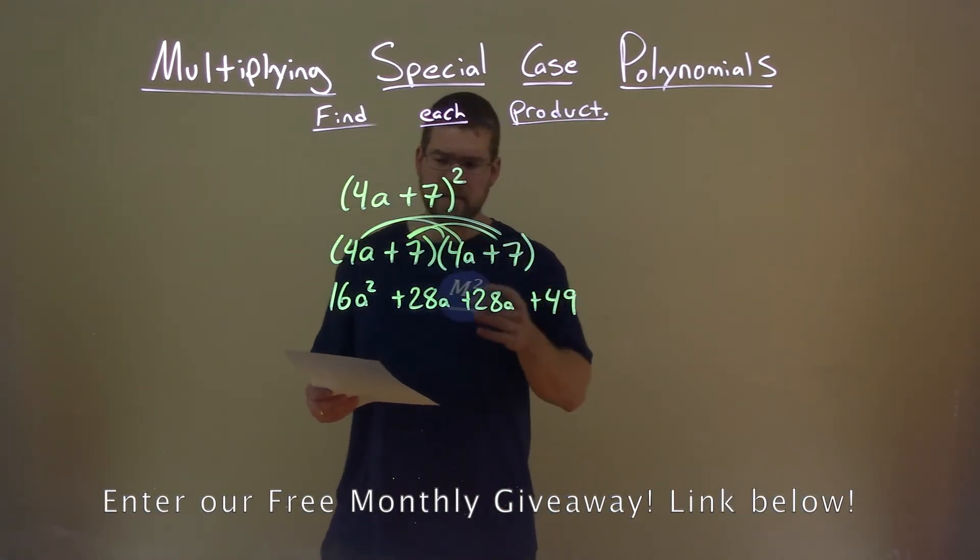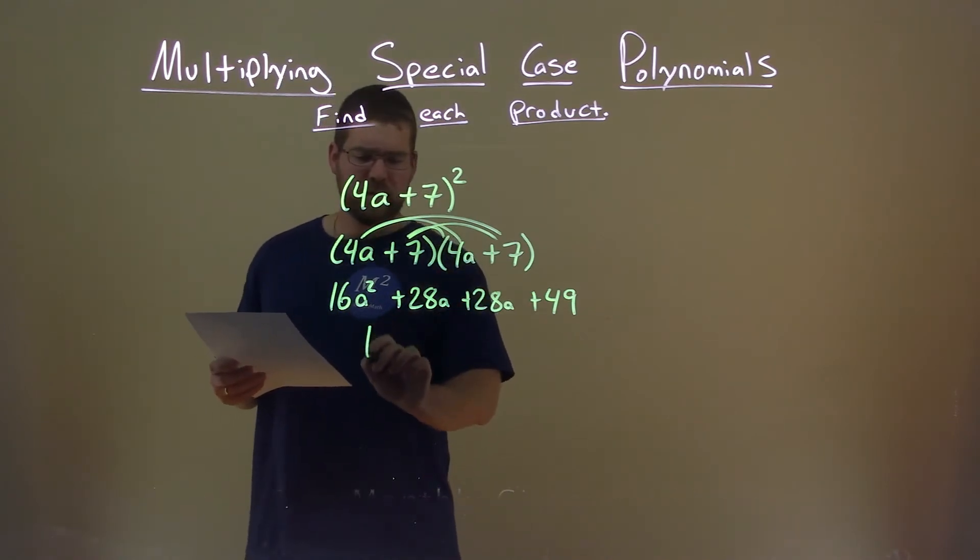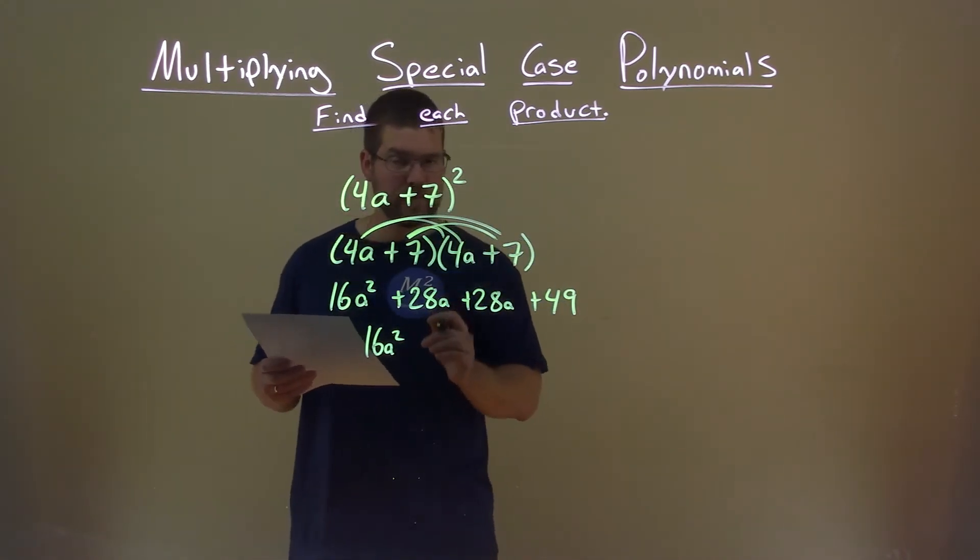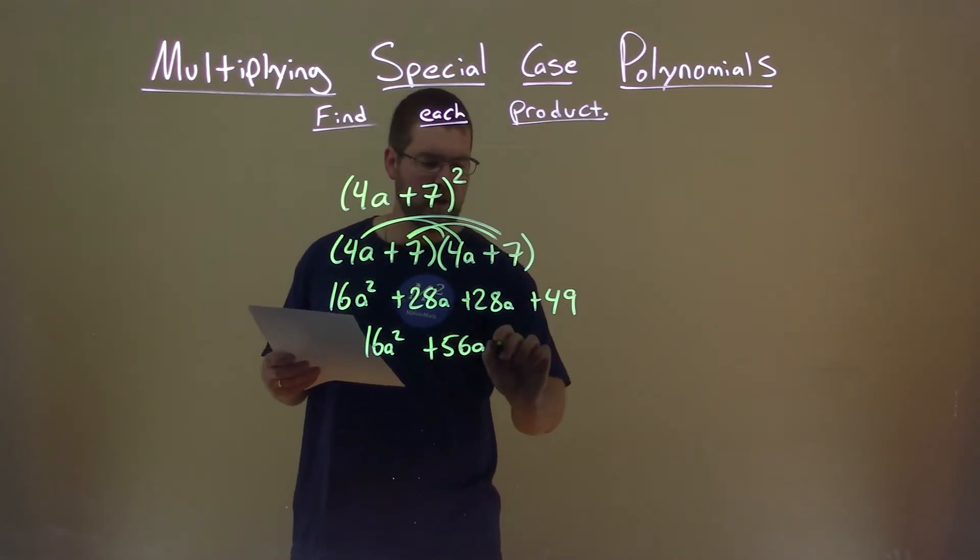Alright, so now we have to combine our like terms. 16a squared is, well, nothing else is squared, so we bring that down. 28a plus 28a becomes 56a, so we add 56a. 49 just comes down.